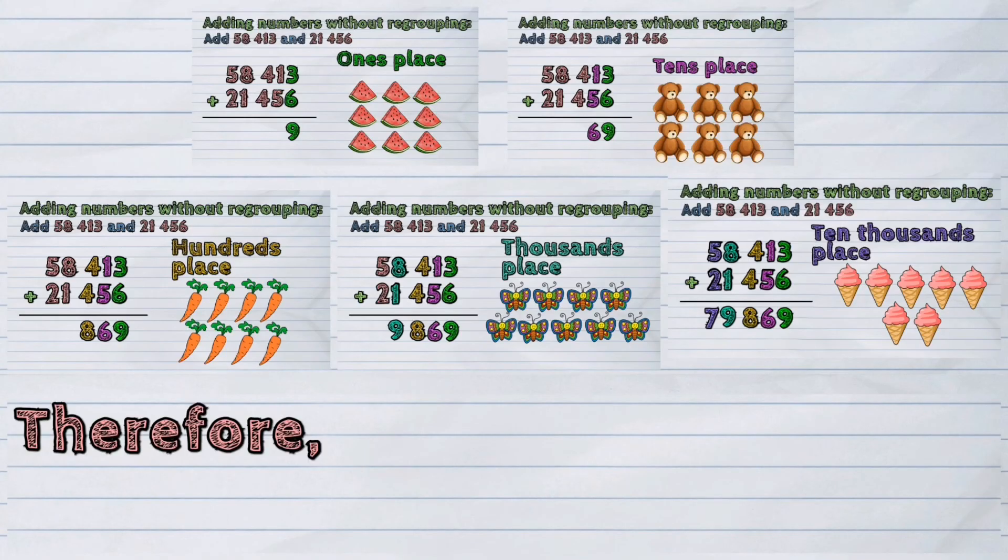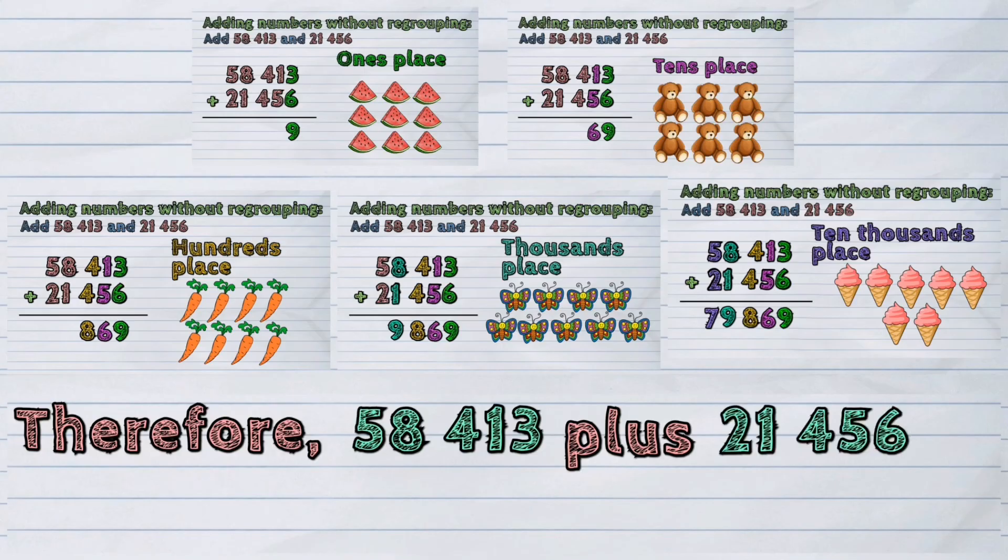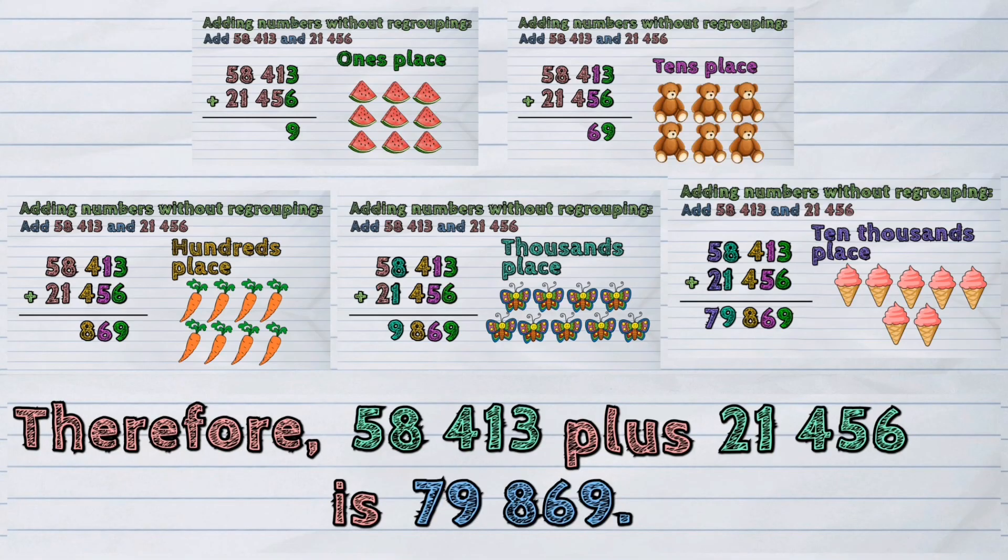Therefore, we can say that 58,413 plus 21,456 is equal to 79,869.